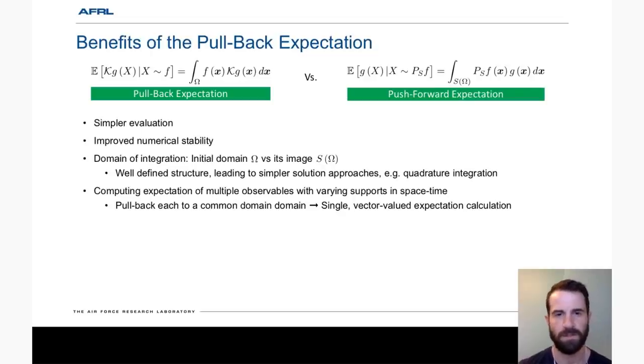Now what's the benefit of doing that pullback via the Koopman operator versus the push forward? One, the pullback is simpler to evaluate with improved numerical stability. There's some well-defined structure on the domain of integration that allows us to use some simpler solution approaches. And if we have multiple observables that are supported on different time horizons, we can actually pull them all back to a common domain. And instead of doing multiple expectation calculations, we can do a single vector-valued expectation calculation.